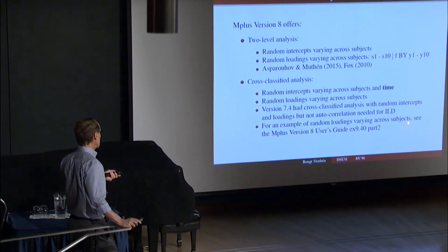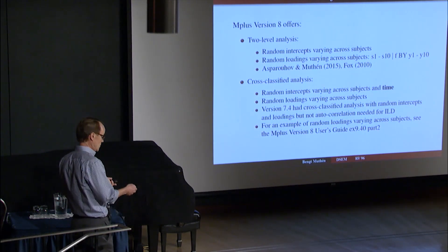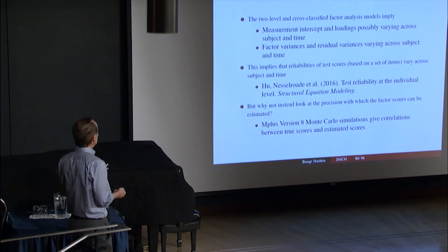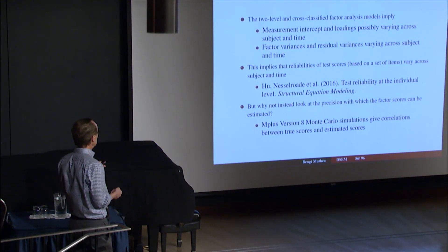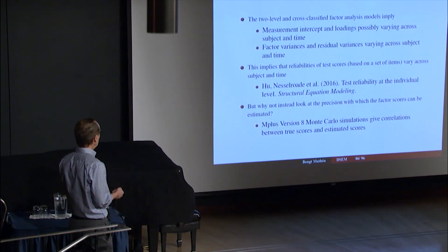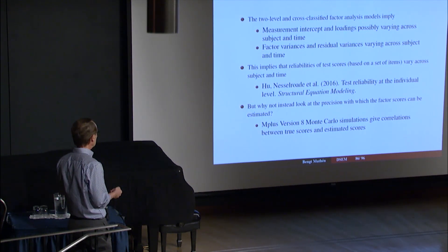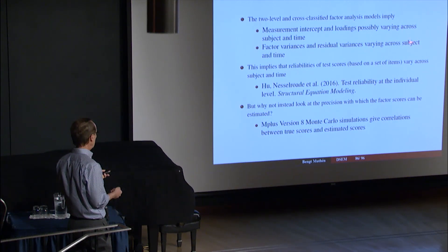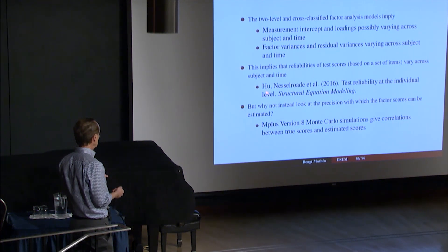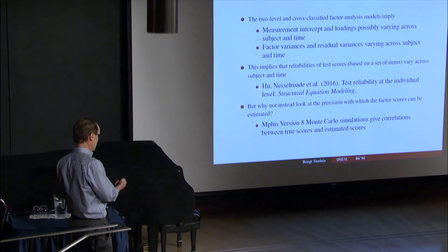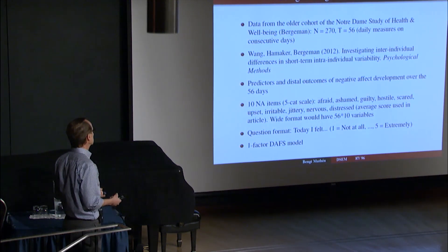For an example of random loadings vary across subjects, see the user's guide 9.40, the last example, last part. Subject-specific reliability comes into play also, not only subject-specific measurements. And intercept and loadings varying, factor variance and residual variance varying across subjects and time implies the reliability of test scores vary across subject and time. This is an article that touched on that. We're not going to focus on that slide.